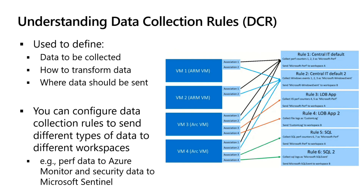You also have to tell it who are the target virtual machines that the DCR is going to be associated with. You may have four VMs, and each VM may have associations with multiple data collection rules.